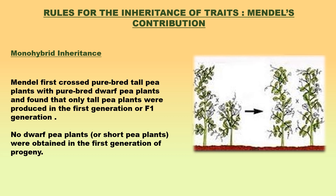Monohybrid inheritance: In order to trace the inheritance of a single pair of contrasting characteristics among the pea plants, like tall stem and short stem, Mendel crossed purebred pea plants differing in these traits and noted their occurrence in the progeny of succeeding generations. Mendel first crossed purebred tall pea plants with purebred dwarf pea plants and found that only tall pea plants were produced in the first generation or F1 generation. No dwarf pea plants were obtained in the first generation of progeny.